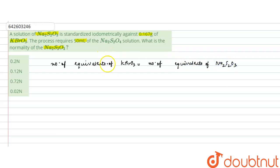Na2S2O3. Now we have the number of equivalents, we can calculate as number of moles into n-factor. Number of moles into n-factor, and n-factor for the reaction can be calculated as: